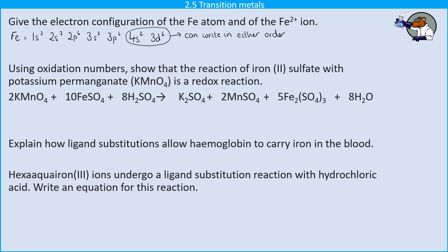If we look at the iron, it's important to be aware that they've asked us about the 2+ iron, not the 3+ iron, because under pressure in the exam sometimes people just reach for the wrong iron. We need to be aware that as well as filling first, that 4s subshell is going to empty first. So we're going to have an electron configuration of 1s2, 2s2, 2p6, 3s2, 3p6, 3d6. There's no 4s2 in there anymore because the 4s subshell has emptied first.